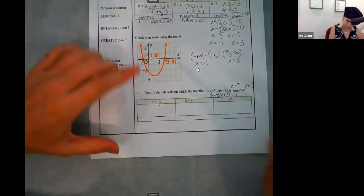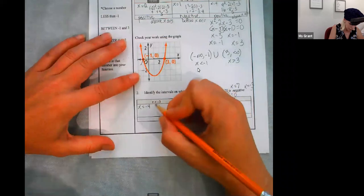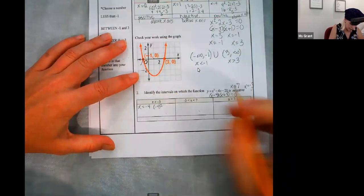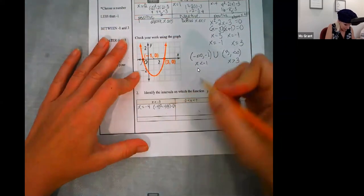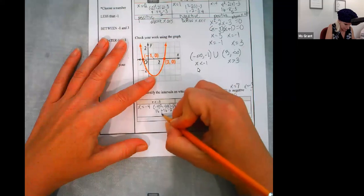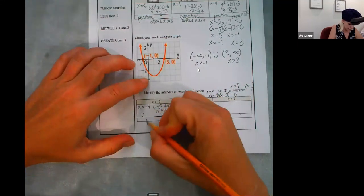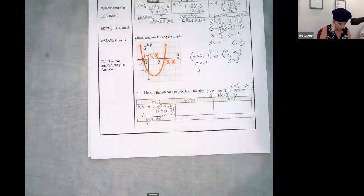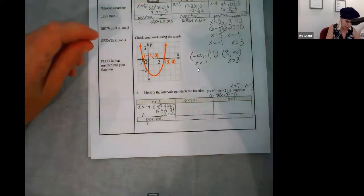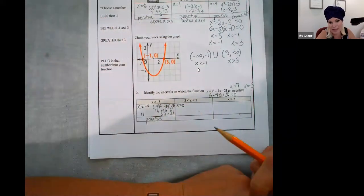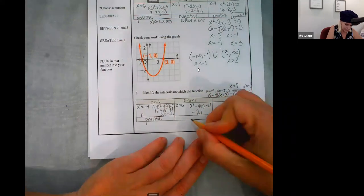Pick a number less than negative three — how about x equals negative four? Negative four squared minus four times negative four minus 21 — sixteen plus sixteen minus 21 — thirty-two minus 21 is eleven. So eleven is positive. But I only want where it's negative. In between negative three and seven, pick an easy number — what if x equals zero? Zero squared minus four times zero minus 21 — negative 21. It's negative. This is where it's negative.